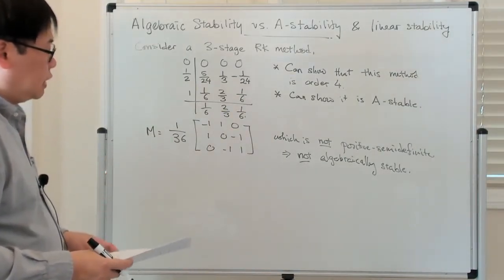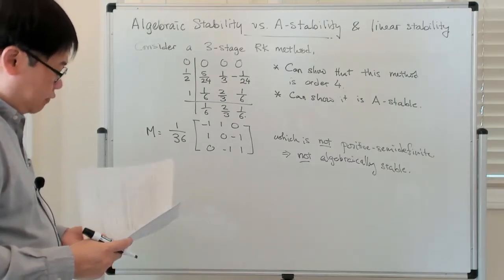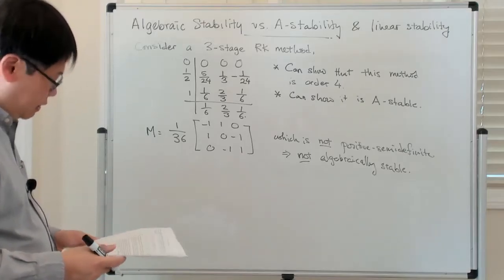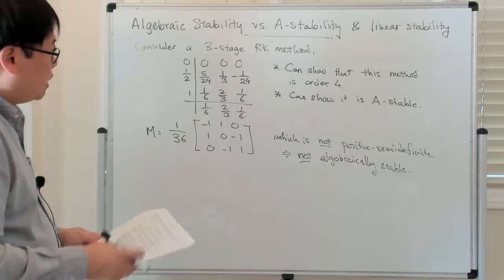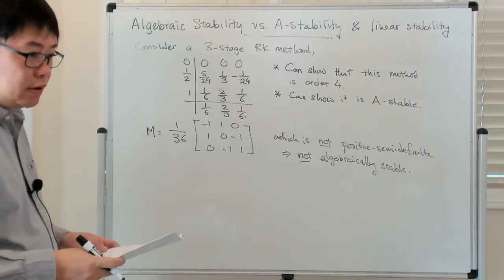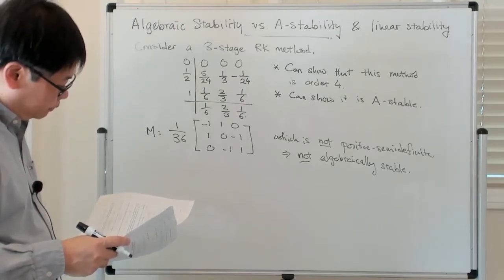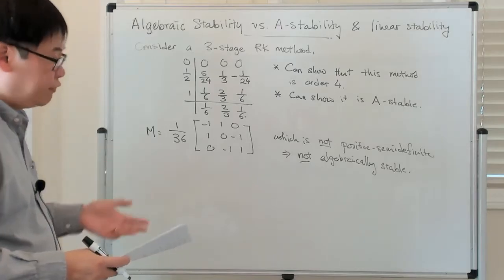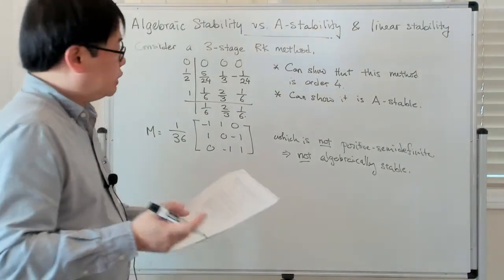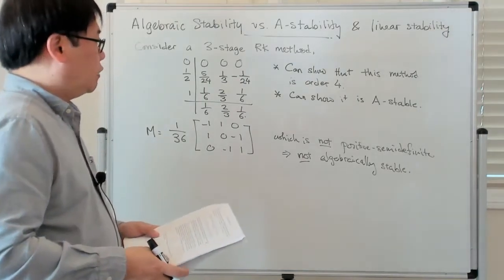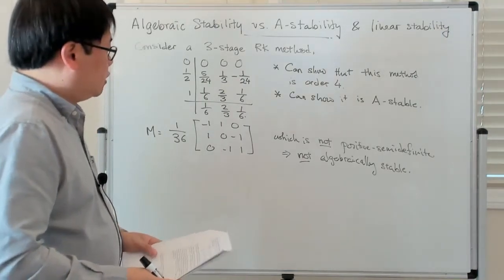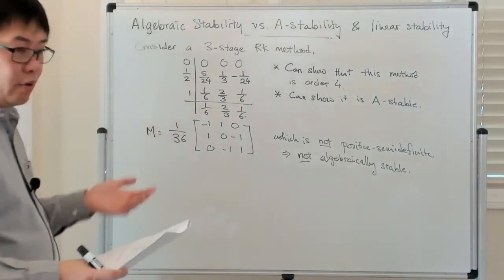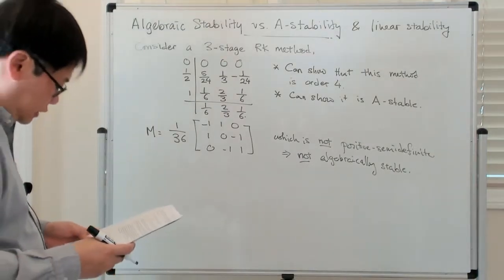You might ask: under what conditions can we show algebraic stability? One particularly easy case is when the famous M matrix is identically zero. If the M matrix is identically zero, then it is obviously positive semi-definite. So let's look at conditions which allow you to say when this M matrix is identically zero.